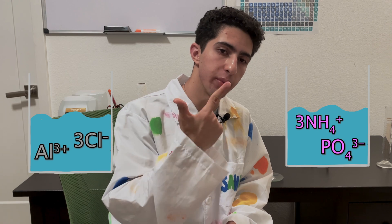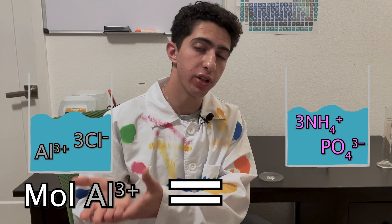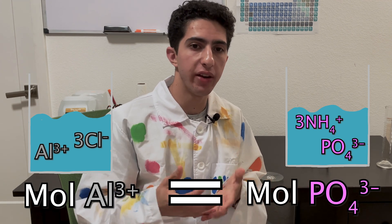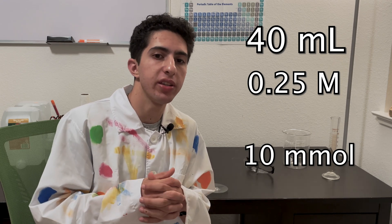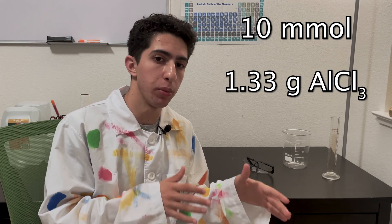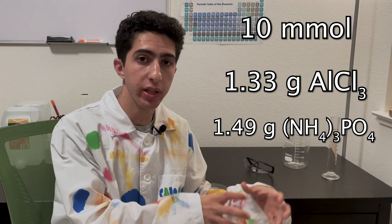So now I just have to do the math. I'm going to create two separate solutions, one of aluminum chloride and another of ammonium phosphate. Ideally, the number of moles of aluminum in the first solution will be equal to the number of phosphate moles in the second solution, so that when I combine them, I don't have an excess of either ion, so nothing goes to waste. I decided on creating 40 milliliters of 0.25 molar solutions, which should give me about 10 millimoles of aluminum phosphate. After converting moles to mass, this gave me about 1.33 grams of aluminum chloride and 1.49 grams of ammonium phosphate that I need to combine each into 40 milliliter solutions.